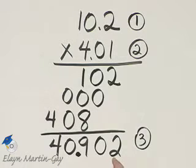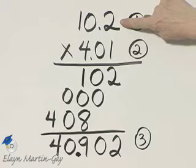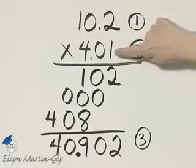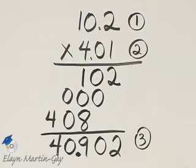It's 40 and 902 thousandths, and hopefully this makes sense to you, because notice that this number is close to 10, this number is close to 4. 4 times 10 is 40, and this product is, of course, close to 40.